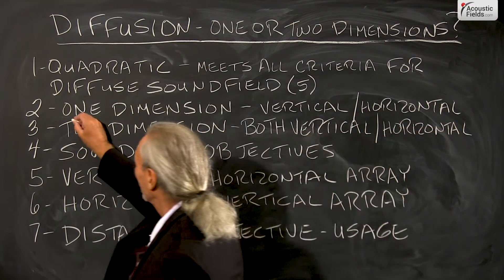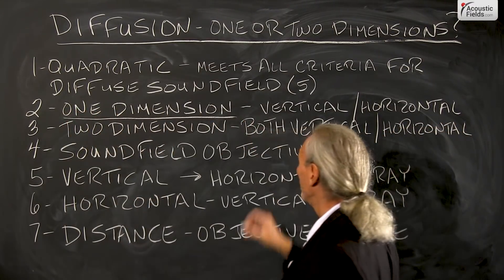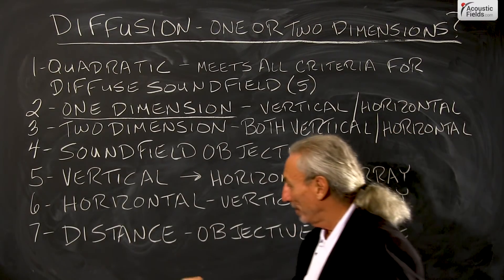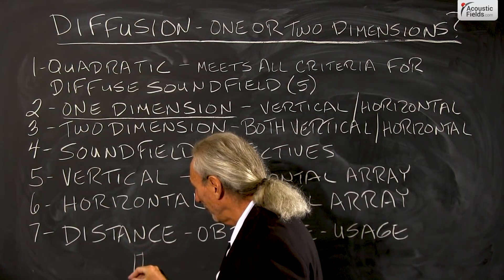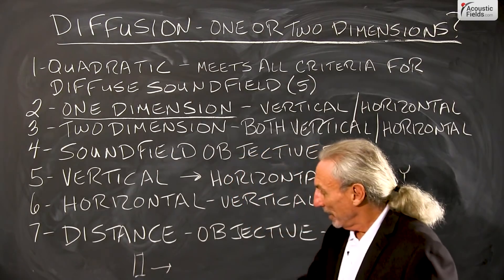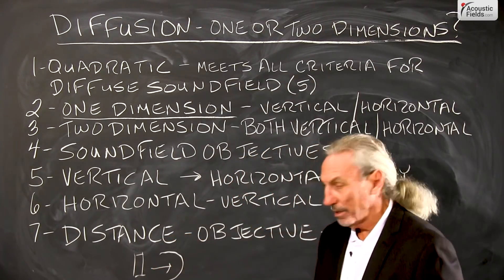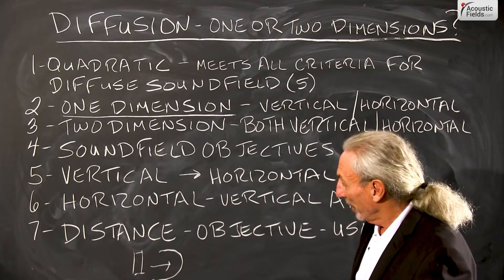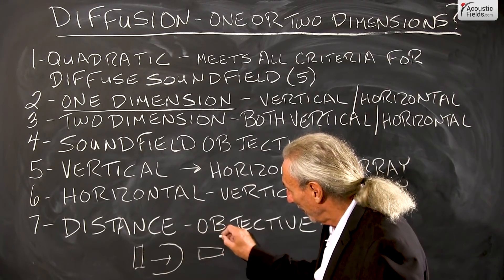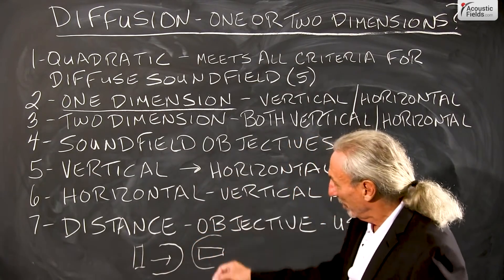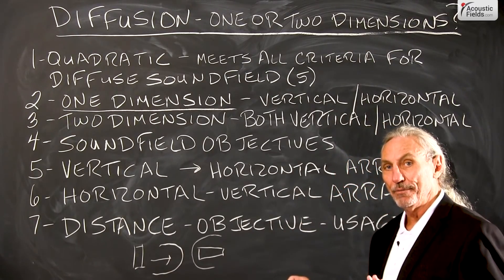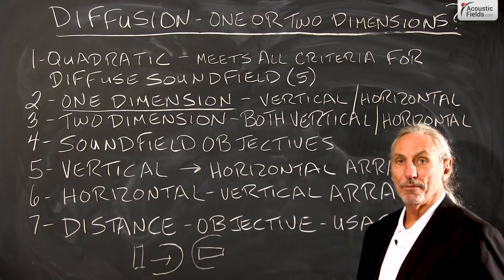And we know from past videos that with one-dimensional diffusion, if we take a diffuser and position it vertically, we know that our distribution of the energy is in a horizontal array. So if we take our diffuser and put it horizontally, we know that then our diffusion is more in a vertical array. So the actual physical positioning of the diffuser determines the distribution of the energy.